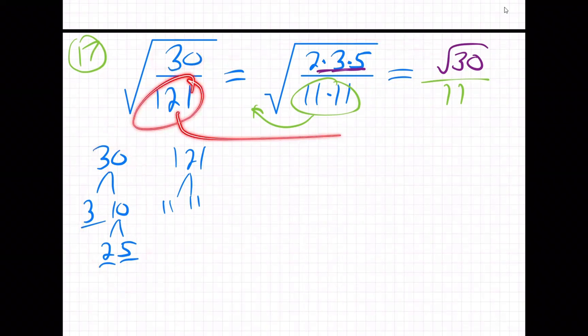On the bottom, you can square root the 121—it's just 11. The root is gone from the bottom because you're able to do the square root.